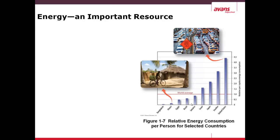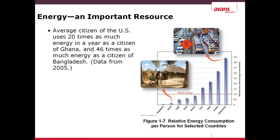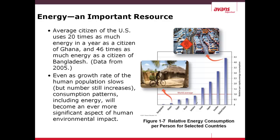Energy is a very important resource, and much like material resources, energy consumption is also not the same around the world. The average citizen of the United States uses 20 times as much energy as a citizen of Ghana, and 46 times as much as a citizen of Bangladesh. This in itself is not a bad result if the consumption of energy in the United States and in the West is renewable, but of course at this time it is not. Even as growth rates of the human population slow, but numbers are still increasing, consumption patterns including energy will become an even more significant aspect of human environmental impact.